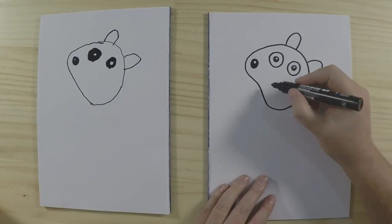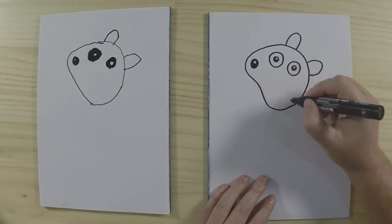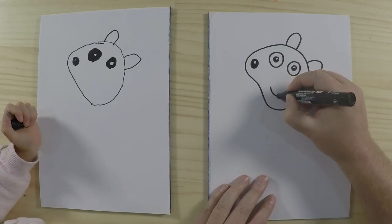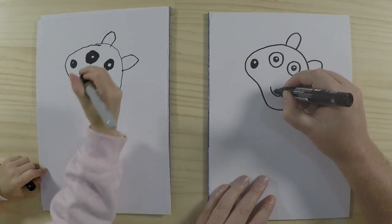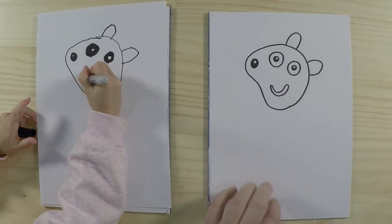And then we are going to draw his mouth. So he has a big smile on him. Draw a line like this and then continue it around the other way like that.